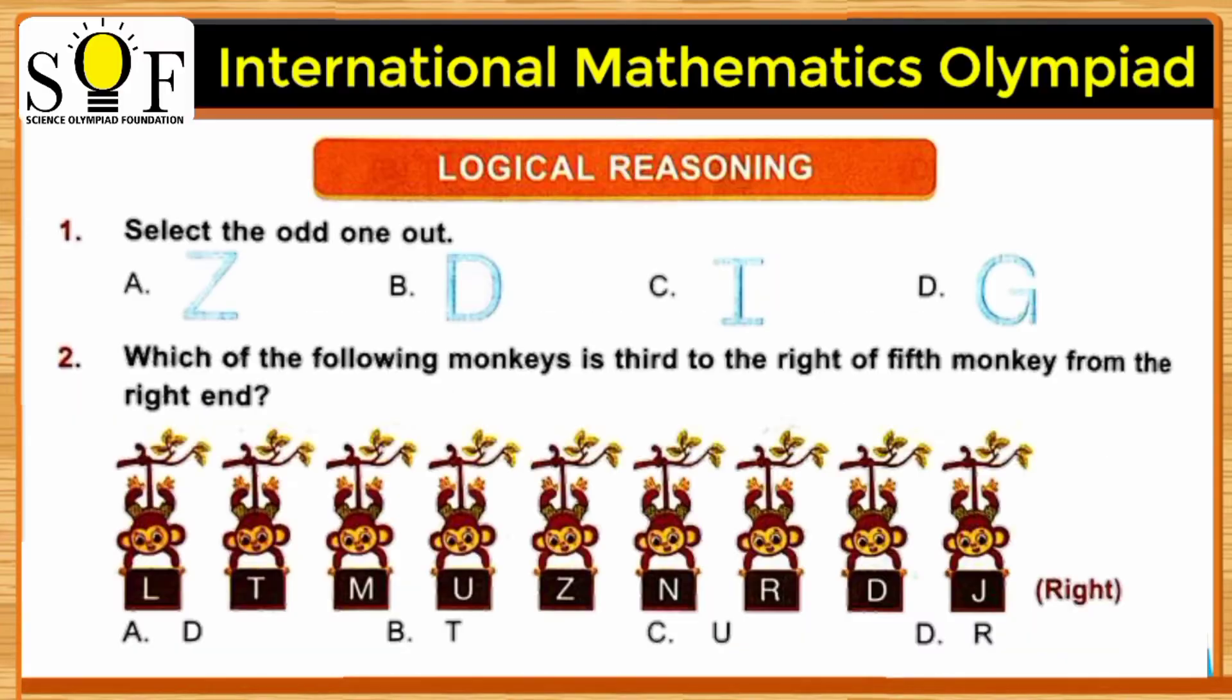Select the odd one out. Here are four alphabets: Z, D, I, and G, and we need to select one out of these which is odd. Z is a consonant, D is also a consonant, G is also a consonant, while I is a vowel. So our odd one out will be option C, letter I.